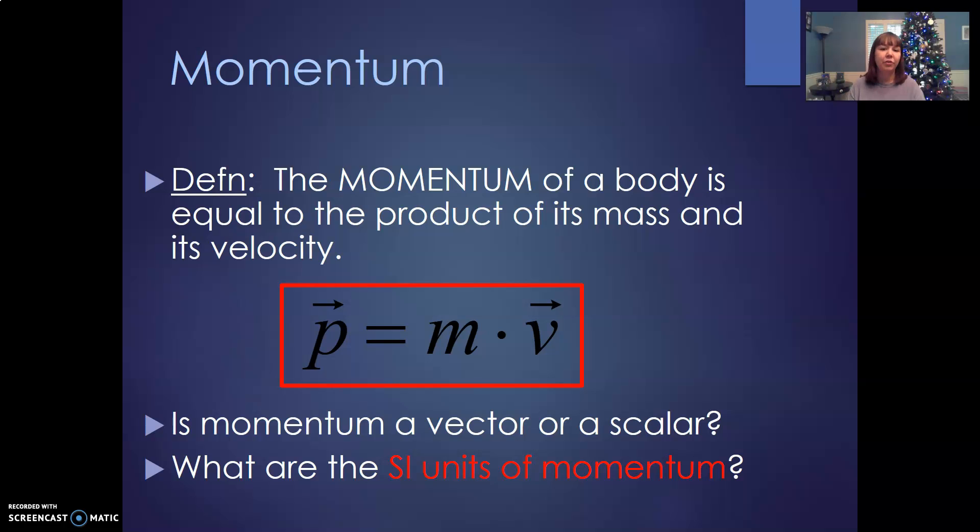Now, is momentum a vector or a scalar? If you notice, velocity is a vector where we're moving in a certain direction. So your momentum will also be a vector. That's what those arrows over the top of the P and the V indicate, is that it's a vector quantity. It's got a direction to it.